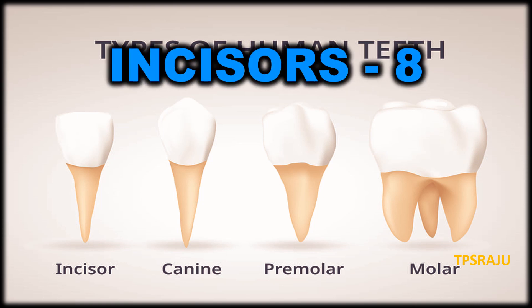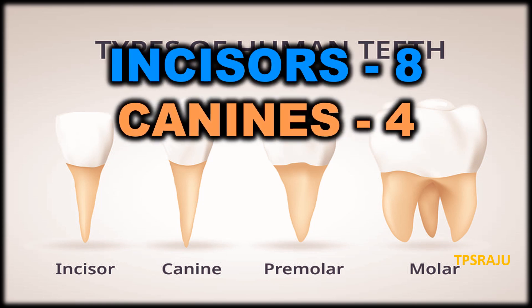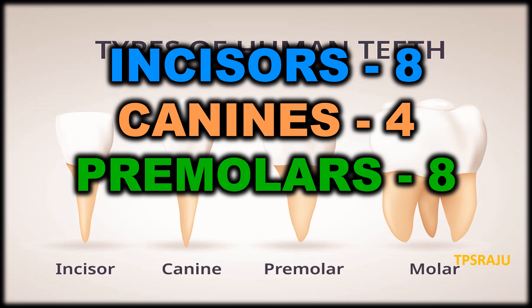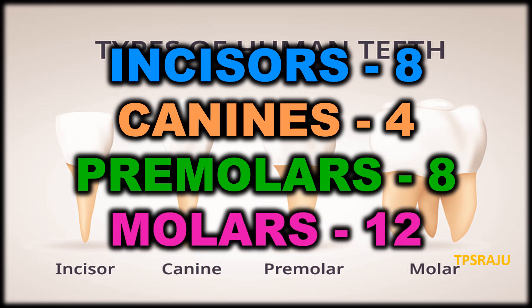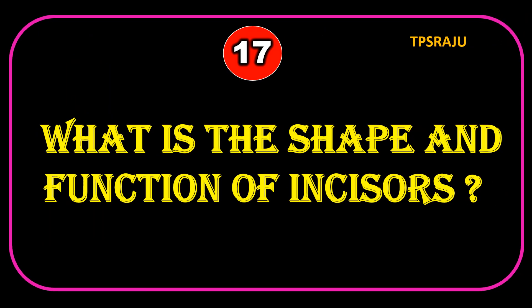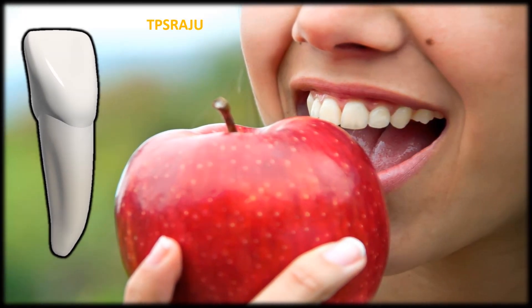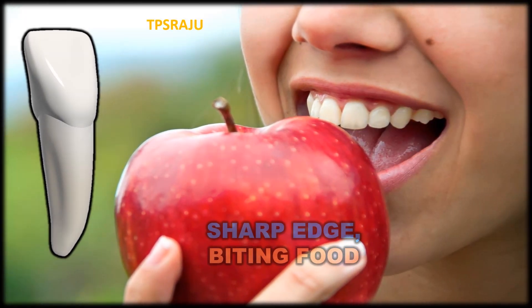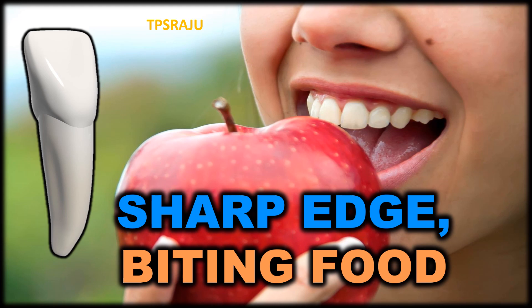The number of incisors is 4 (two per jaw), canines 4, premolars 8, and molars 12. The shape of incisors is sharp-edged and their function is biting food.